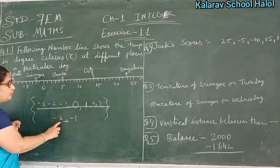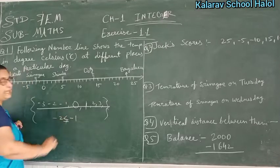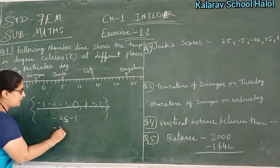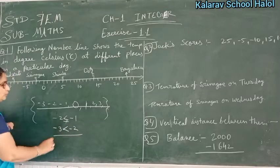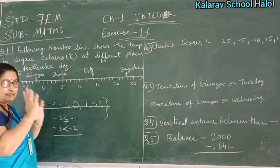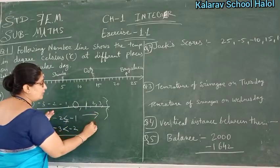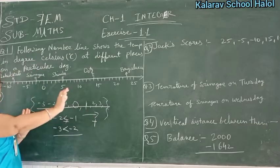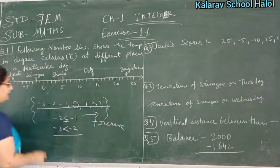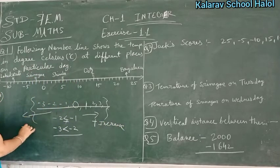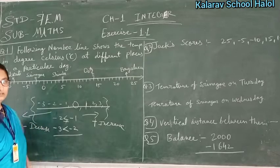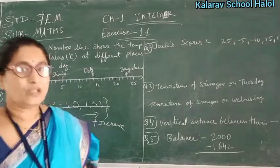It means minus 2 is less than minus 1. Same thing — minus 3 is less than minus 2. As you go right hand side, numbers increase, and from the left hand side, numbers decrease.